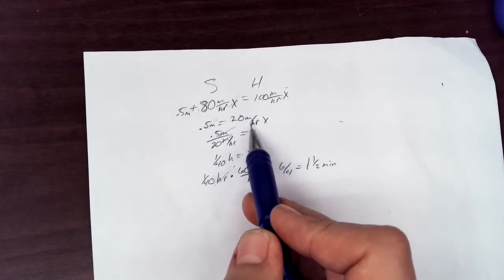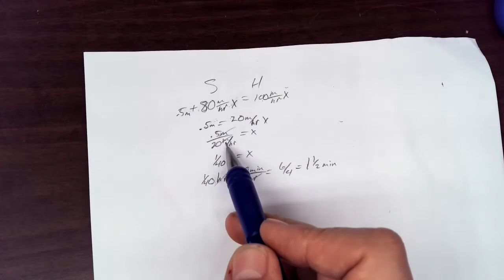Subtract this over, we get positive 20 miles an hour. Divide the 20 under here. The miles cancel out.